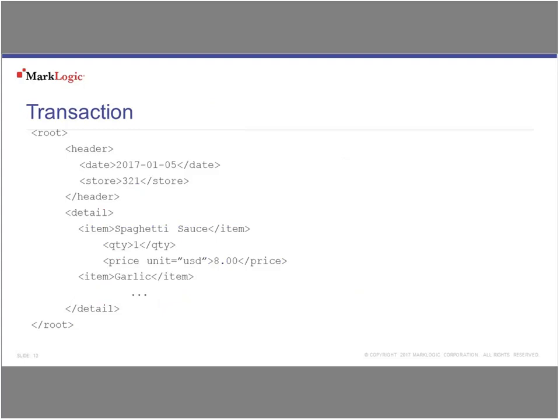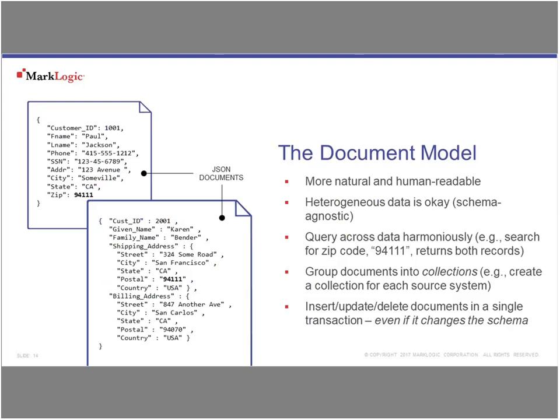If you look at a document — this happens to be an XML document — I can store all of that data in one XML document. I've got my header section and my detail section. The nice thing about this is that I can have a variable-length record. Every record can look fundamentally different than the record before it — which is a limitation in relational databases, where every record has to look essentially the same. This is especially important when we start talking about disparate data — data that's similar but not the same.